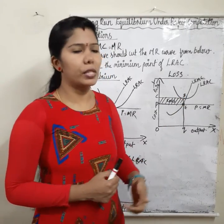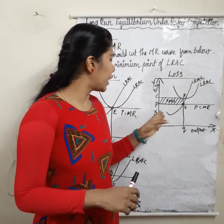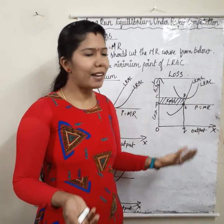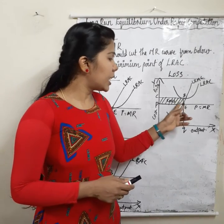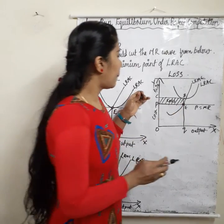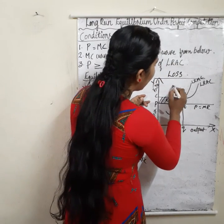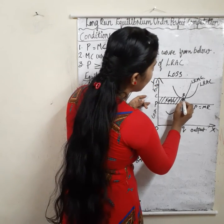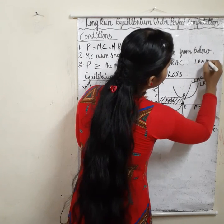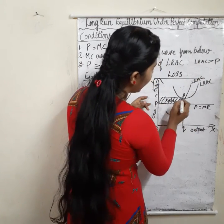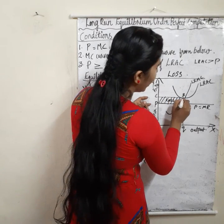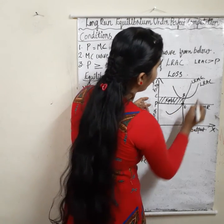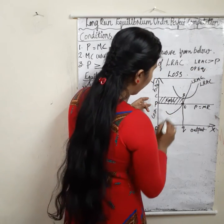Here is the situation of loss. In this diagram, the x-axis represents output, y-axis represents cost and price. P equals MR is the price and MR curve, LRAC is the average cost curve, and LRMC is the marginal cost curve. E is the equilibrium point. Here, LRAC is greater than price. The minimum point of LRAC is above the price line.